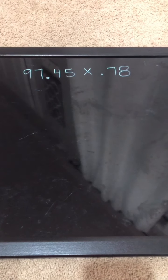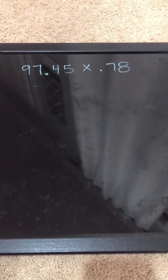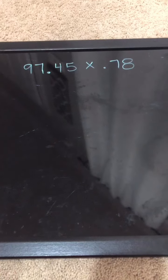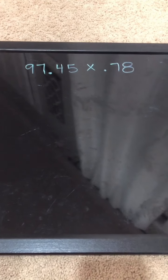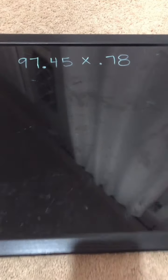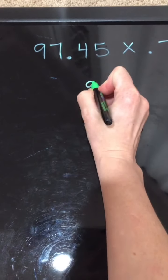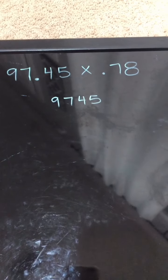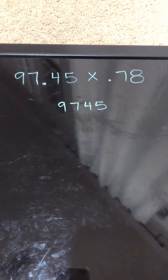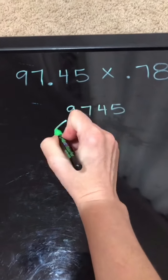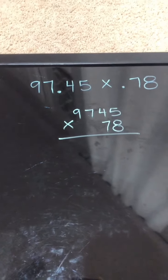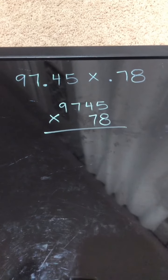So we have 97.45 multiplied by 0.78. We know that the first thing that we need to do is to ignore those decimal points. So I'm going to go ahead and write down 9745. I've just taken out that decimal there and then I'm going to take out the decimal in 0.78 also. So multiply by 78. Now we have a normal multiplication problem here.